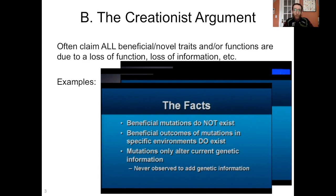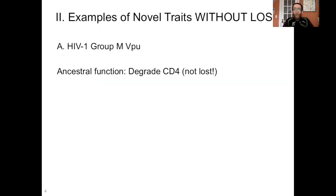This particular creationist claim is trivially easy to refute. All we need are some examples of mutations that are beneficial, that don't have a downside, and that add some kind of function or information without a corresponding loss of function or information. And that's really easy to find. I'm going to give you two examples of such a mutation. The first is HIV-1 group M VPU. VPU is a protein found in HIV and the related SIVs. Its ancestral function is to degrade a protein called CD4. Just know that in all of the SIVs and HIV-1, VPU maintains CD4 degradation — that's its ancestral function, and it continues to do that.